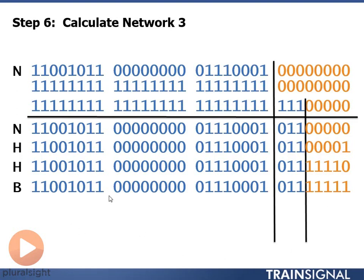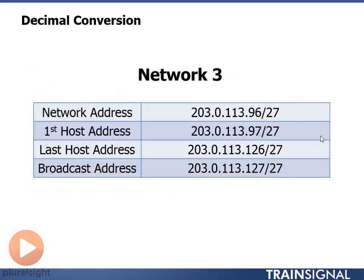So let's take each 8 bit section now and convert it back to decimal and take a look at what we have. So our network address here, 203.0.113.96 slash 27. First host, .97. Last host is .126. And my broadcast address is .127.